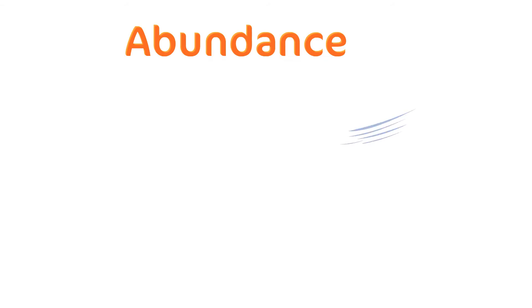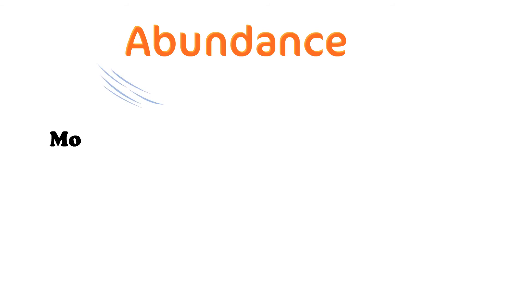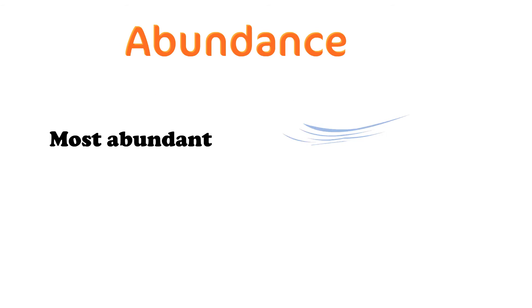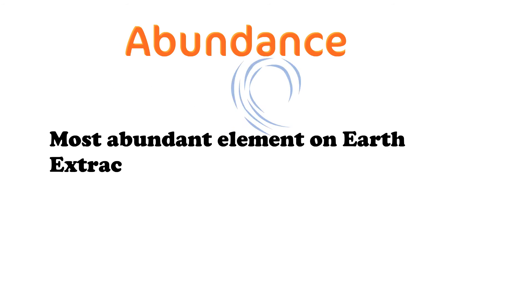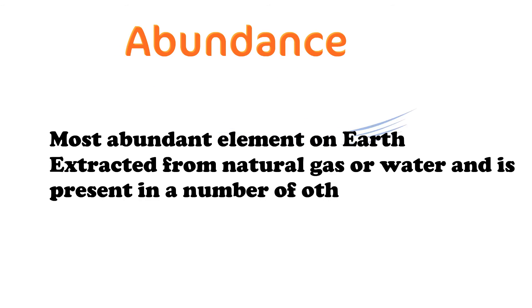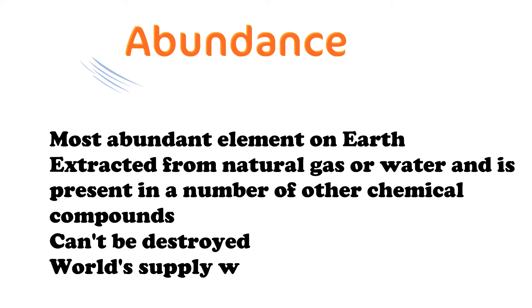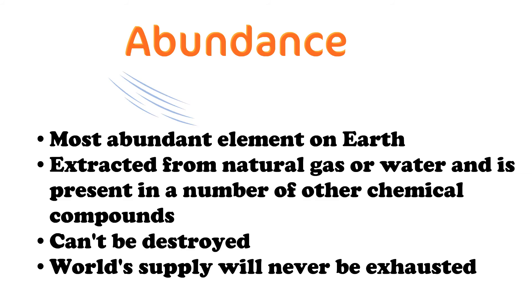Abundance: One of the primary advantages of hydrogen as a fuel is its abundance. In fact, hydrogen is the most abundant element on earth. It can be extracted from natural gas or water and is present in a number of other chemical compounds. Hydrogen is also an element and can't be destroyed, only recombined with other elements, meaning that the world's supply will never be exhausted, as with fossil fuels.